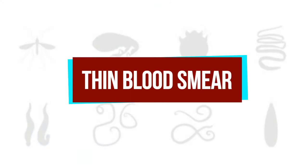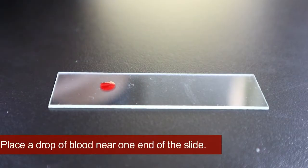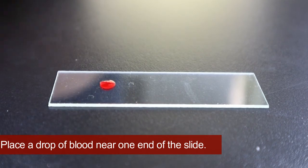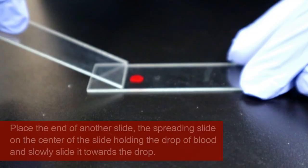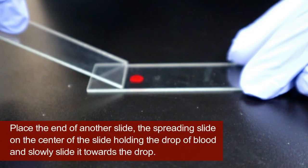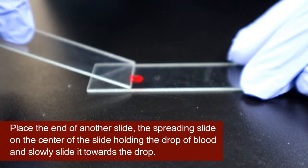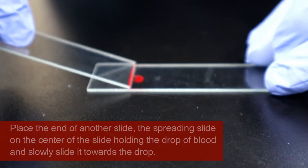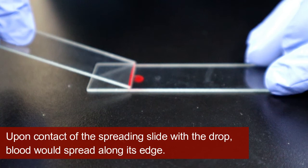Thin blood smears. Place a drop of blood near one end of the slide. Place the end of another slide, the spreading slide, on the center of the slide holding the drop of blood and slowly slide it towards the drop. Upon contact of the spreading slide with the drop, blood will spread along its edge.